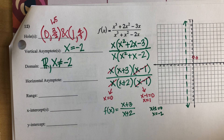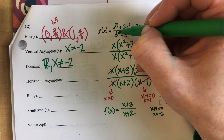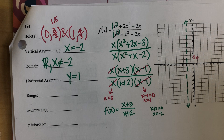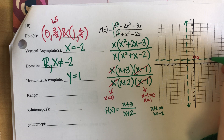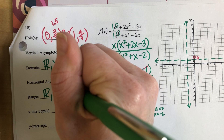For my horizontal asymptote, I am going to go back to my original function and compare my numerators. I have X cubed and X cubed — those exponents are the same. So I am going to divide my coefficients, and Y equals 1. I'll sketch that in on my coordinate plane, and that value affects the range — so Y cannot equal 1.